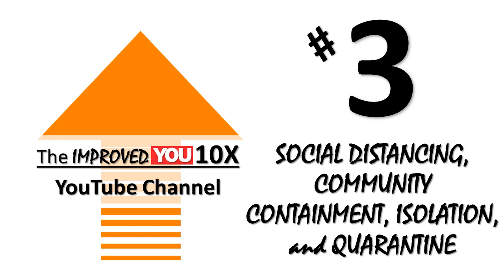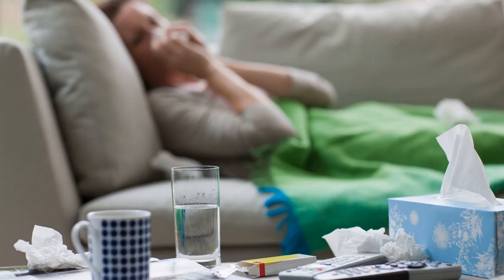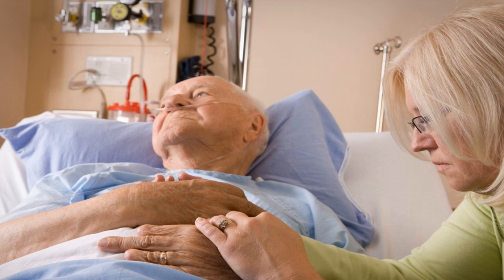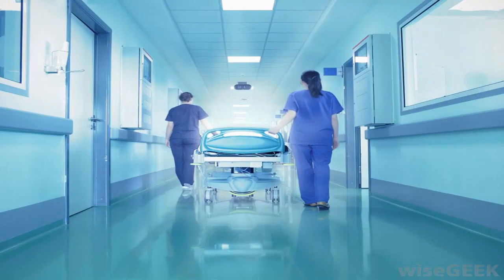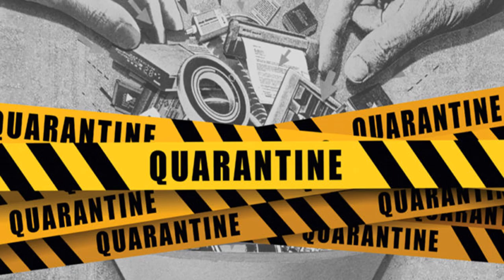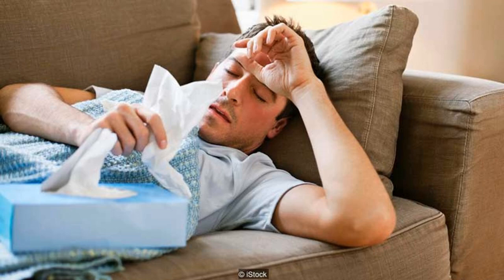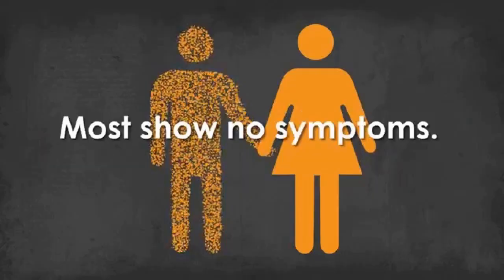Number 3: Social distancing, community containment, isolation, and quarantine. Isolation separates sick people with a contagious disease from people who are not sick. This process of separating ill people with contagious diseases from non-infective individuals is used to protect non-infective persons and usually occurs in hospital settings but can also be done at home. Quarantine separates and restricts the movement of people who are exposed to a contagious disease to see if they become sick. These people may have been exposed to a disease and do not know it, or they may have the disease but do not show symptoms.